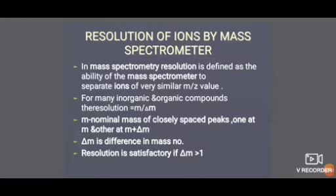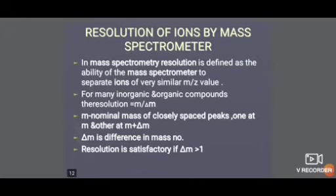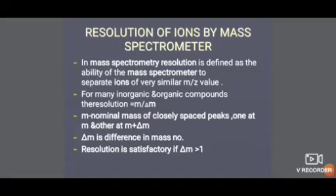Here, m is the nominal mass of closely spaced peaks — one at m and the other at m plus delta m. Delta m is the difference in mass number. Resolution is satisfactory only if delta m is greater than 1; that is, the difference in mass number must be greater than 1 for satisfactory resolution.